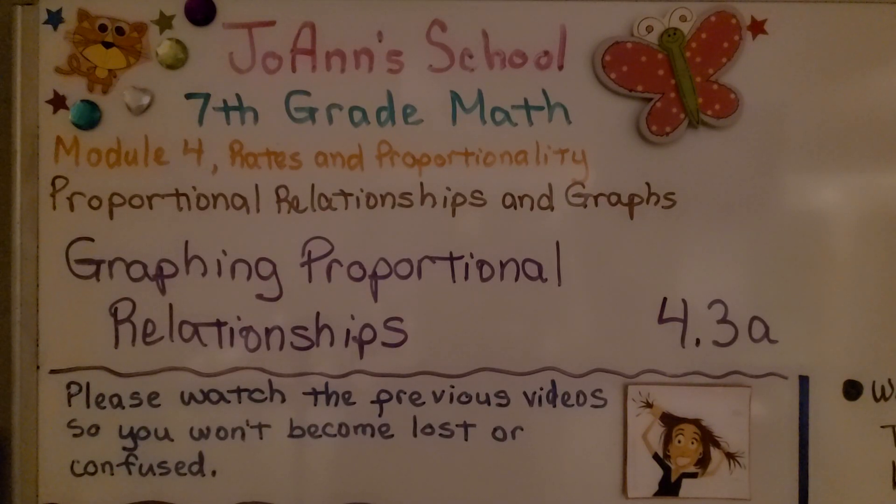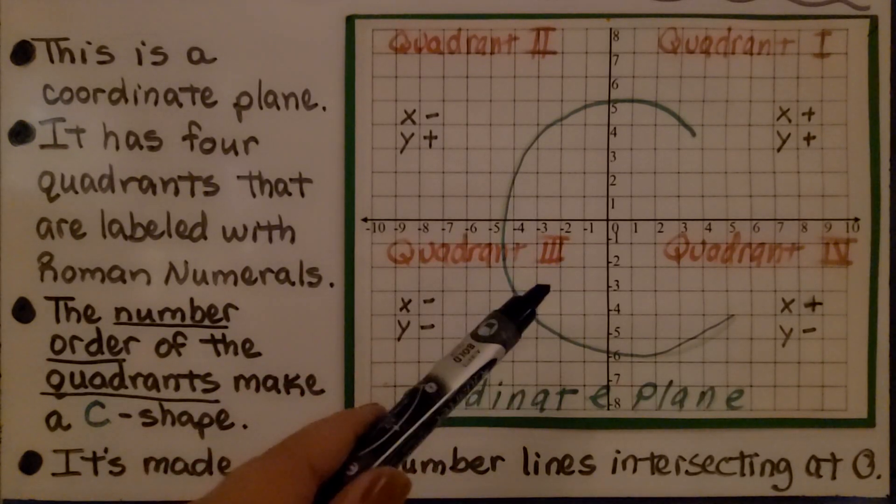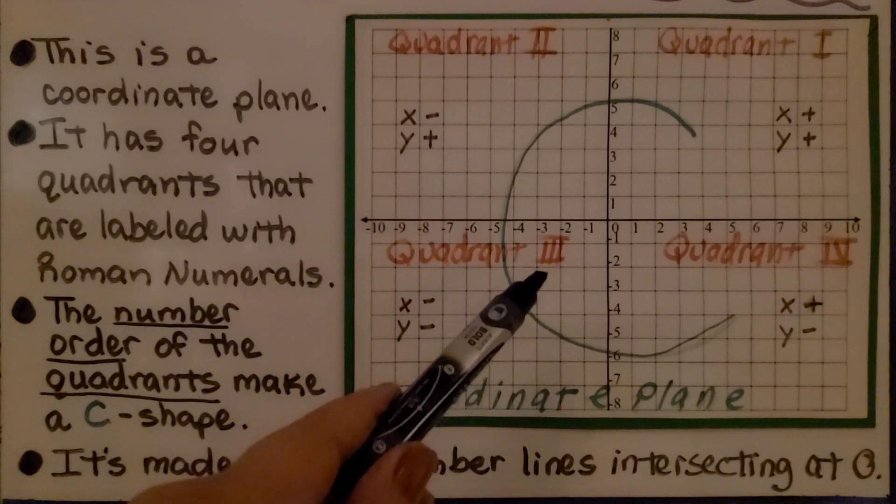Lesson 4.3a, Graphing Proportional Relationships. Back in sixth grade math in chapter 12, we learned about a coordinate plane. So this is a coordinate plane. It's got a lot of notes on it, though.